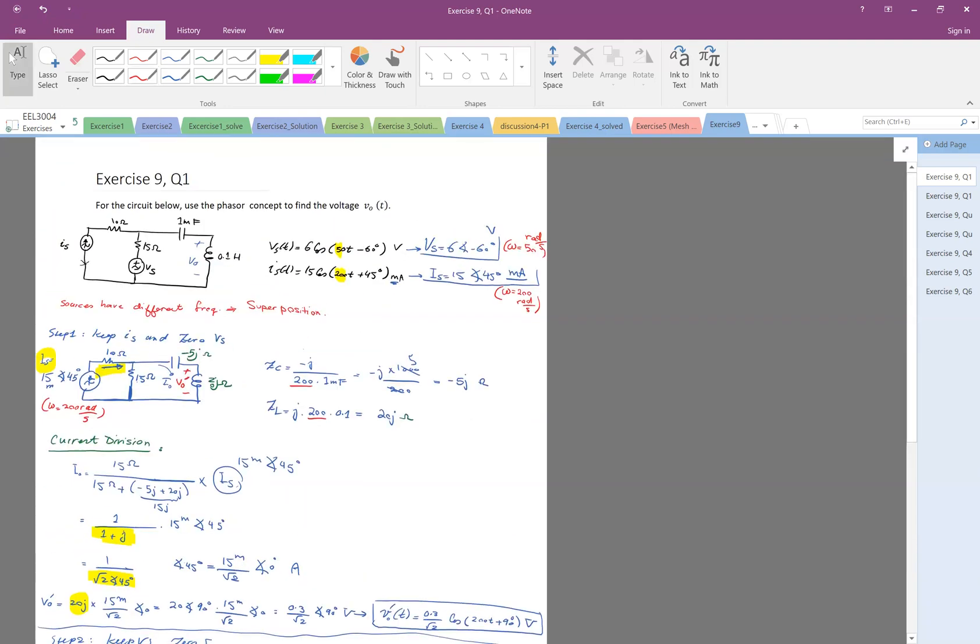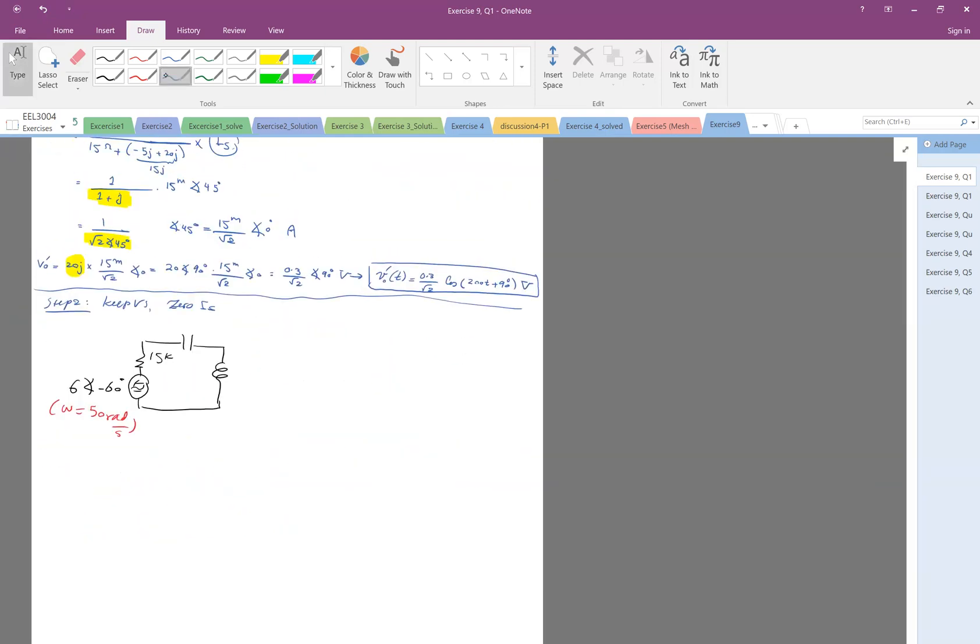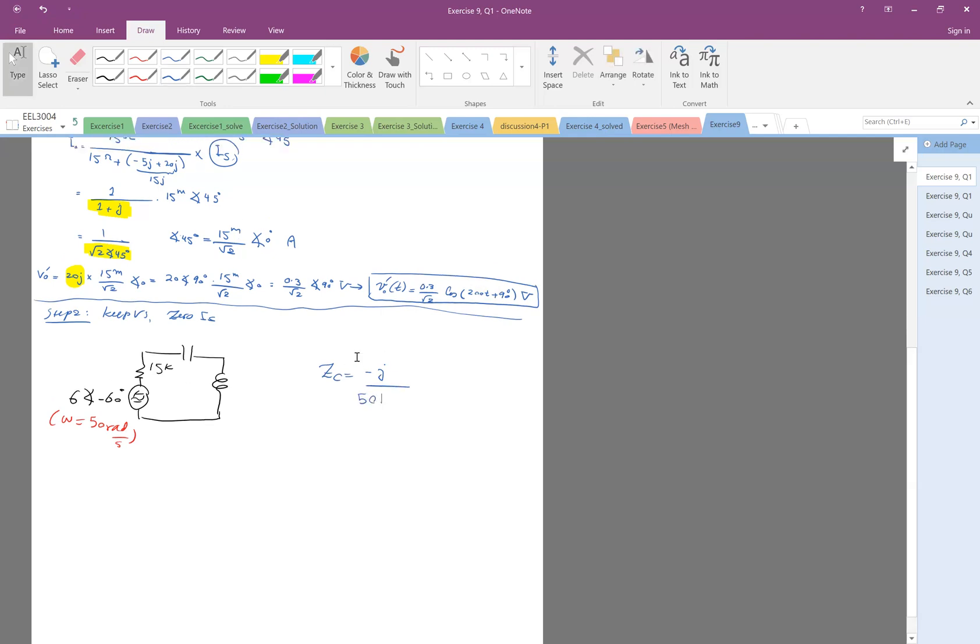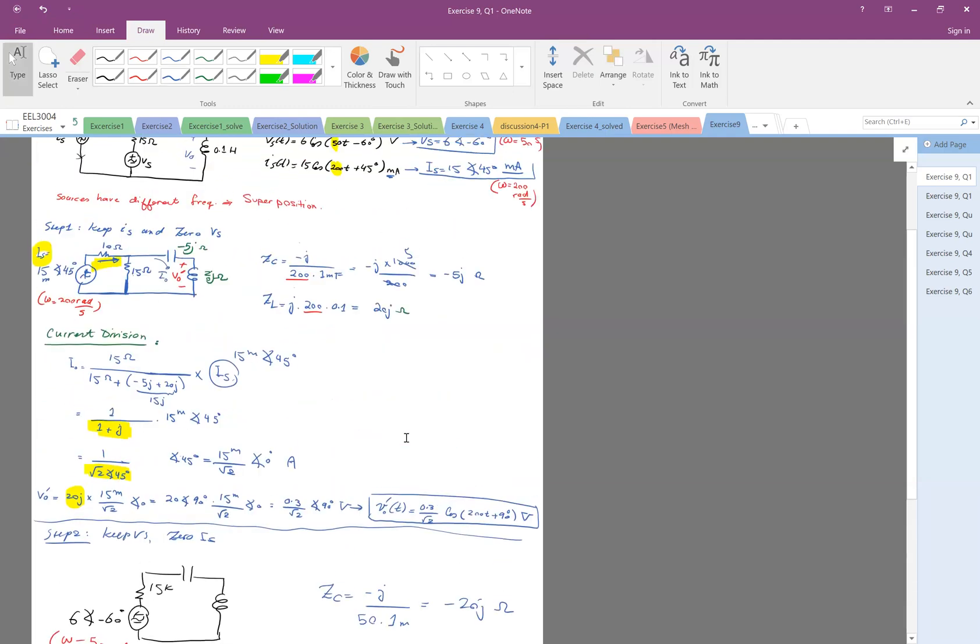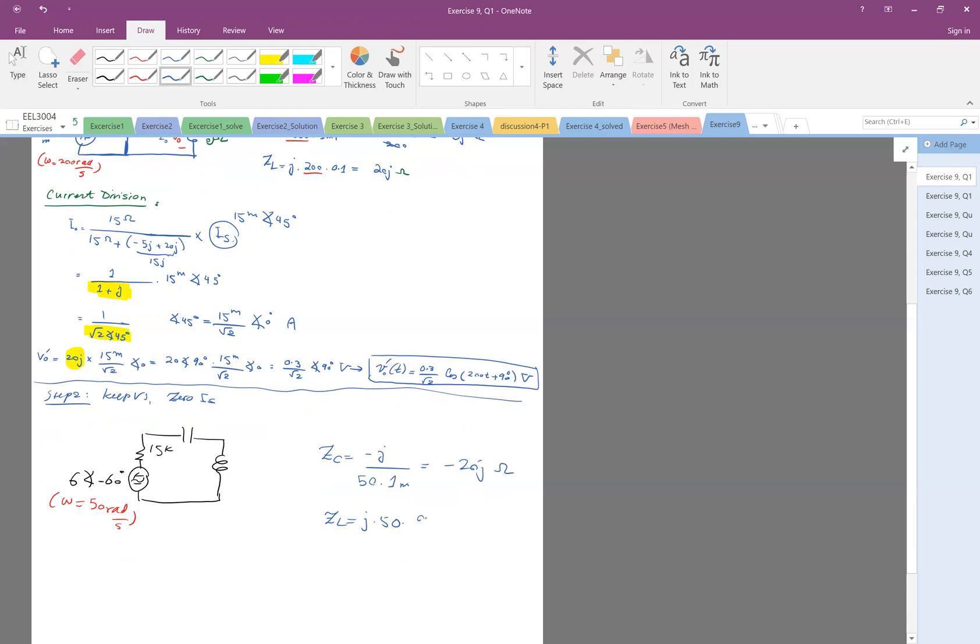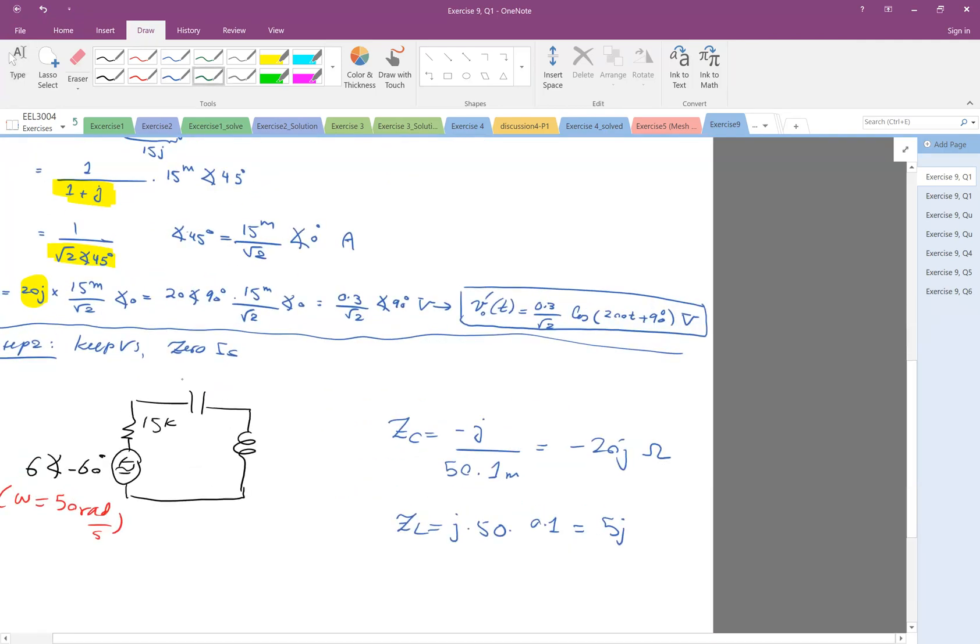And then also I need to calculate ZL and ZC again because the frequency changed, so the impedance has changed. So ZC is minus j divided by omega, which is 50, times the C, which was 1 millifarad, which becomes negative 20j. And ZL equals j times 50 times 0.1, which is 5j. So here the impedance is negative 20j, this one is 5j.